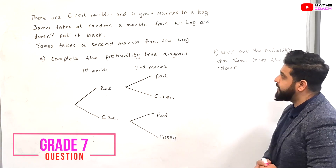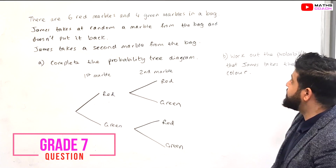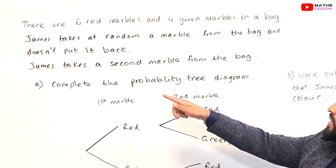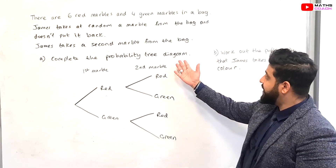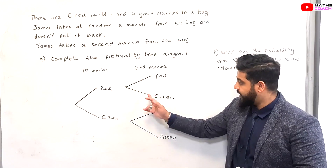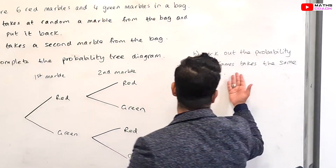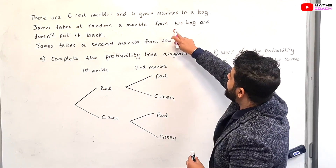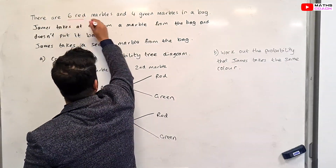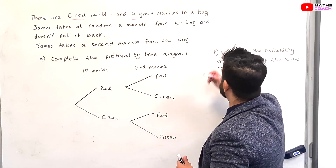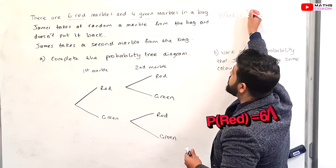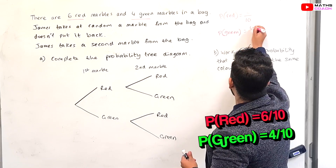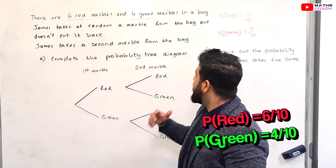So let's begin with our first question. We have six red marbles and four green marbles in a bag. James takes at random a marble from the bag and he doesn't put it back. He then takes a second marble from the same bag. Complete the probability tree diagram — we just need to fill in all the different probabilities. Part B: work out the probability that James takes the same colour. We know there are a total of 10 marbles: six red and four green. So the probability of a red marble is 6 out of 10, and the probability of a green marble is 4 out of 10.